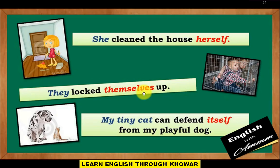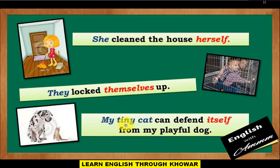Last example: 'My tiny kid can defend itself from my playful dog.' The reflexive pronoun used here is 'itself,' because the subject and object refer to the same entity.